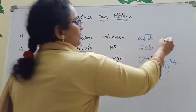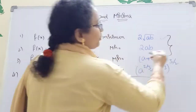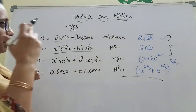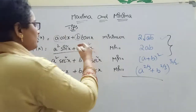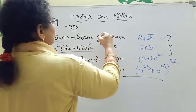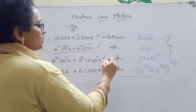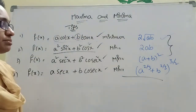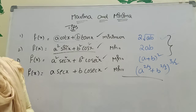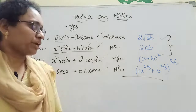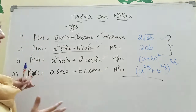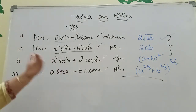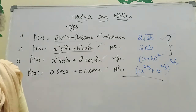These are very important formulas — directly write 2 into root of AB. Just remember these four formulas, they are very important. This is the Maximum Minima — how to find minimum values. You should take a screenshot; that will be better for you. Next we will go to problems.